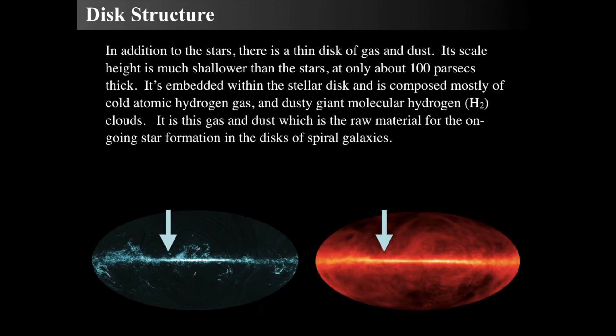The disk structure also has a thin layer of gas and dust. The scale height is much shallower than the stellar disk — about 10 times less thick, maybe only 300 light years or 100 parsecs — and it's embedded within the stellar disk. It's composed mostly of cold atomic hydrogen gas, and on the right we're seeing emission from 21-centimeter radiation, which is that cold atomic hydrogen gas.